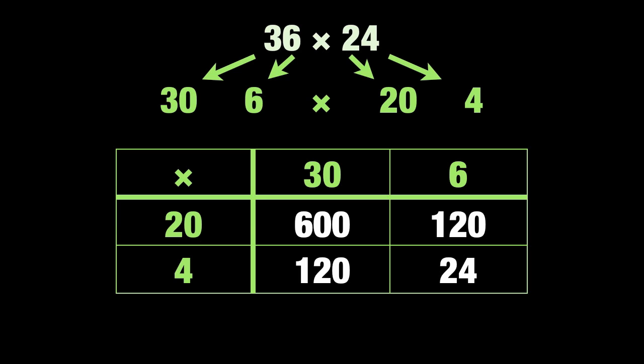Now we have completed the grid we have to add together the answers so far. You can add across or down, but it might be easier to go vertically in case you have chunky numbers. Once you've got the two columns added together you need to add those answers as well. 720 add 144 equals 864. Hey presto! That's the answer — 36 times 24 equals 864.